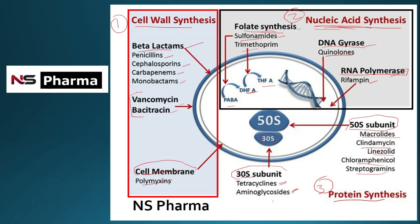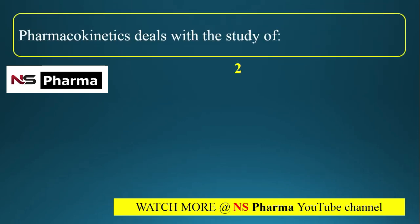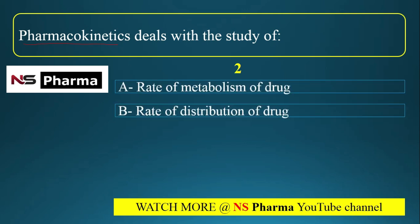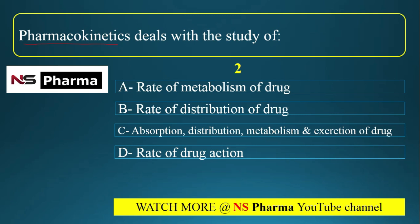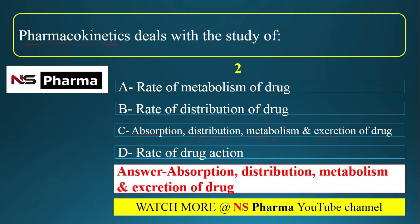Question 2: Pharmacokinetics deals with the study of — (a) rate of metabolism of drug, (b) rate of distribution of drug, (c) absorption, distribution, metabolism and excretion of drug, (d) rate of drug action. The correct answer is option C: ADME. Pharmacokinetics is what the body does to the drug, while pharmacodynamics is what the drug does to the body.